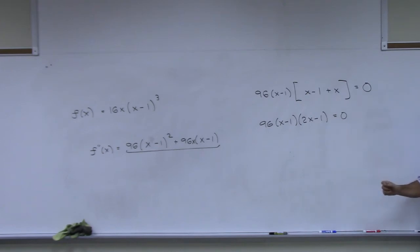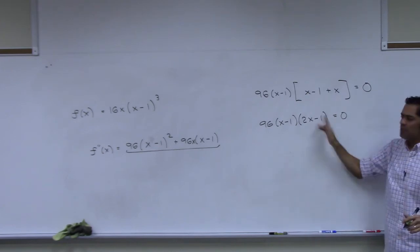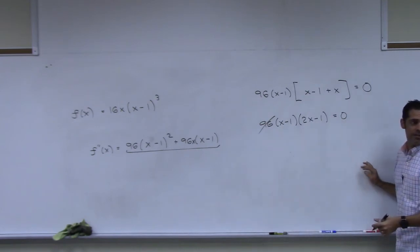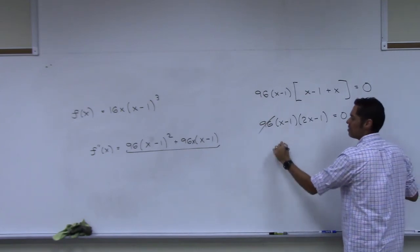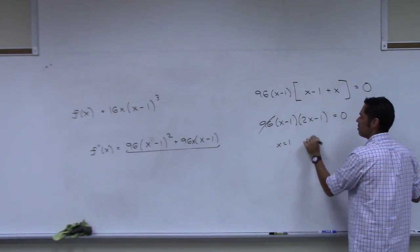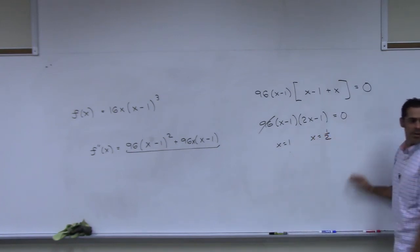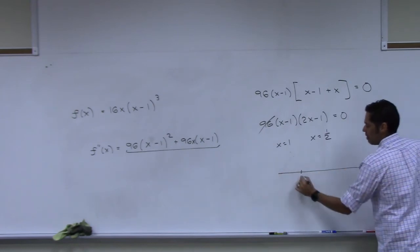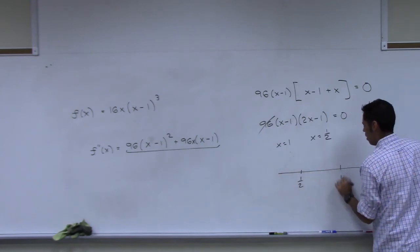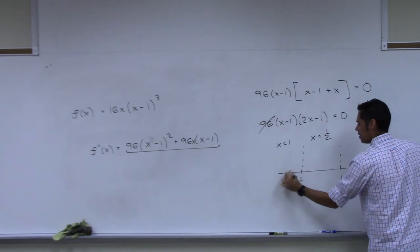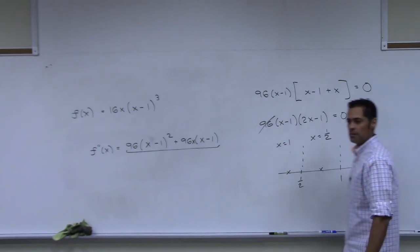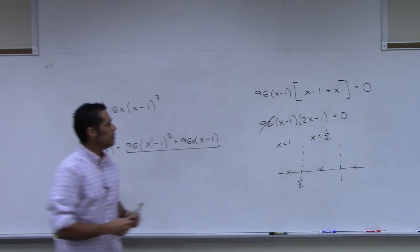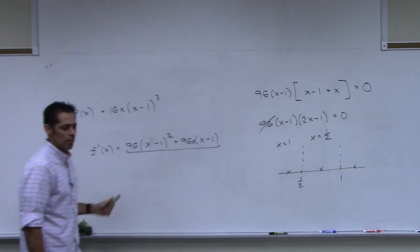So now you have 96 times x minus 1. And then this right here is 2x minus 1. You just put those together. And then would we distribute the 96? Nope. Now you set each of these equal to zero. And so 96 doesn't even factor in. Because you can just divide it out. You set that to zero, you get one. You set this to zero, you get one half. So you have two numbers. One half and one test, test, test. Does that make sense?